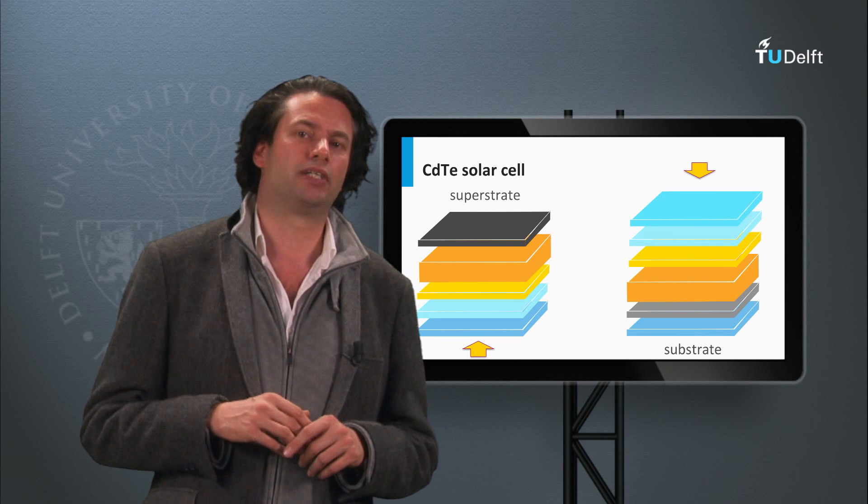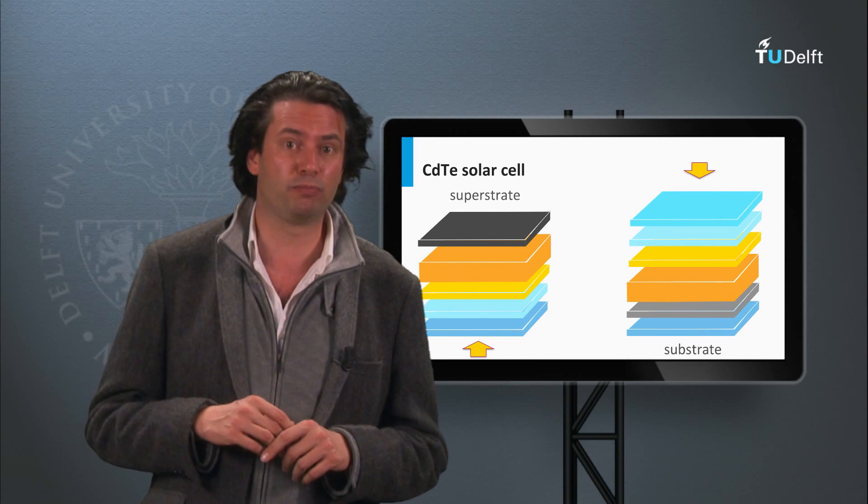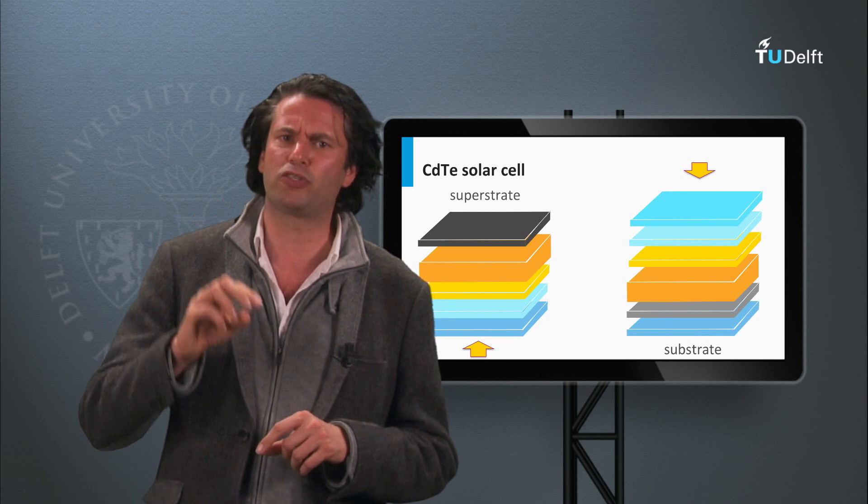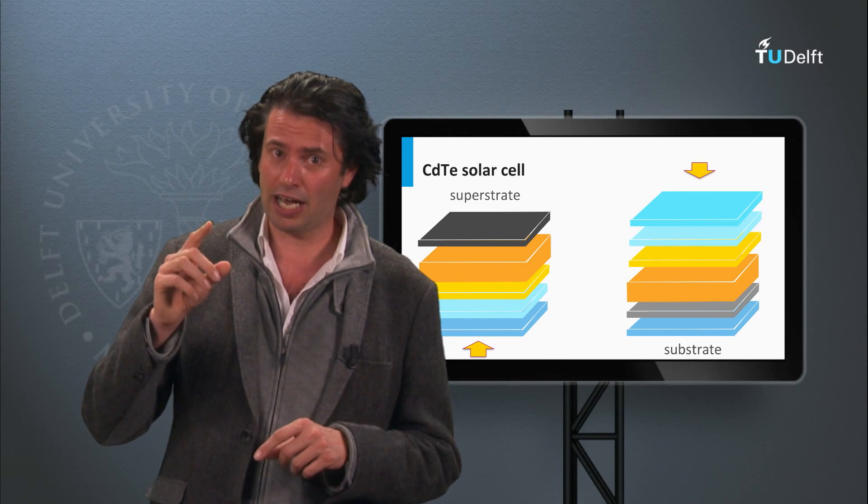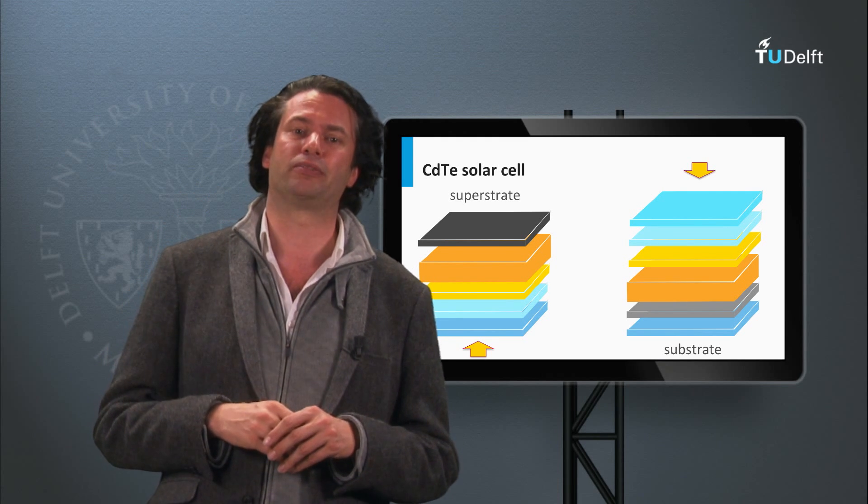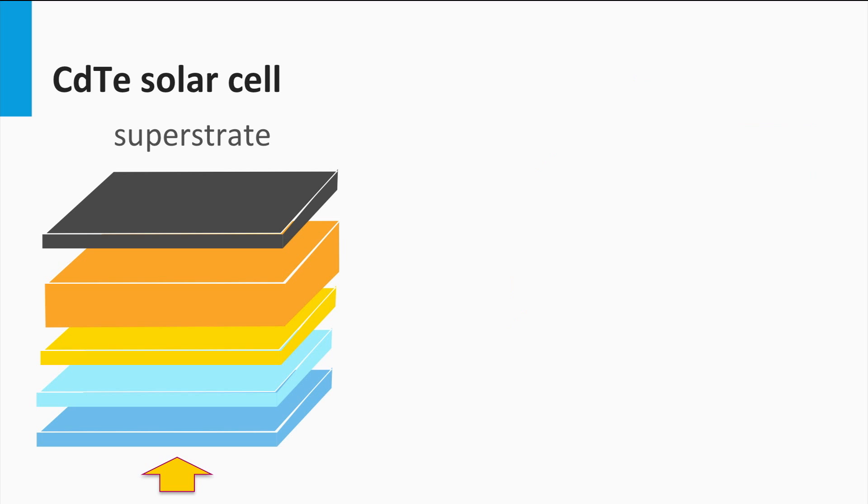An important concept I did not discuss for the thin film solar cells is the two types of solar cell configurations, the superstrate and the substrate configuration. A superstrate configuration is a cell concept in which the substrate on which the solar cell is processed acts as the front window at which the light enters the solar cell.